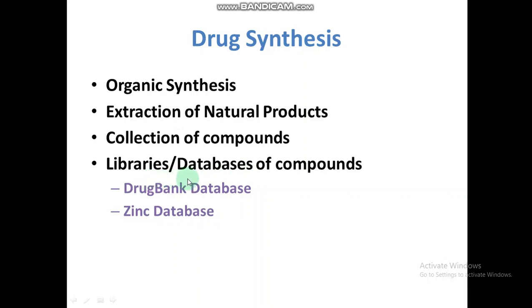We can retrieve compounds from databases for computer-aided drug design or computational studies. Databases like DrugBank or ZINC contain virtually available or already commercialized drugs, and we can obtain these drugs and analyze them through computational studies. This is also known as network pharmacology, in which we use already discovered drugs and analyze them for other diseases.